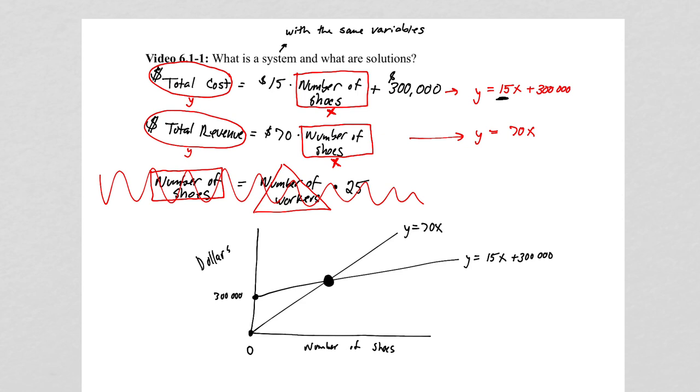Either those lines are going to intersect the way ours do right here. They could be parallel, in which case they don't intersect. Or they can lie directly on top of each other, where they're intersecting everywhere. They're essentially the same line. Here, we have two lines that intersect.